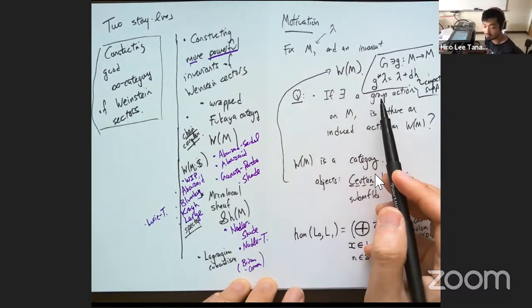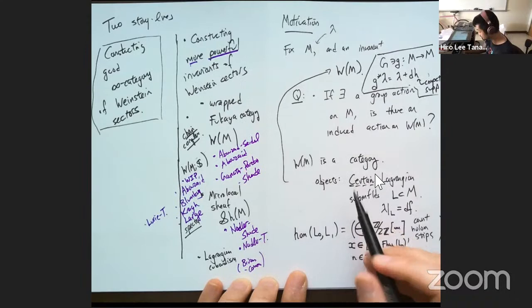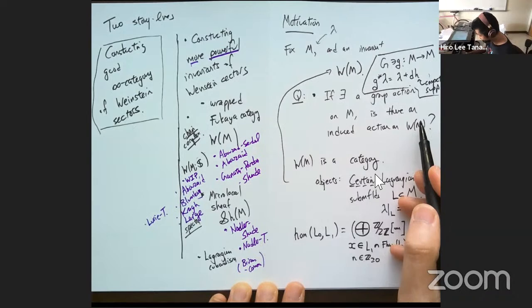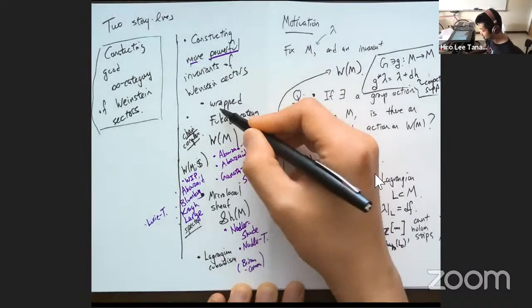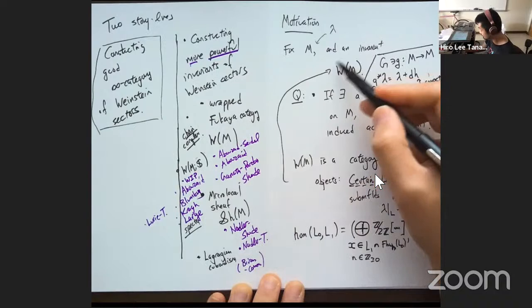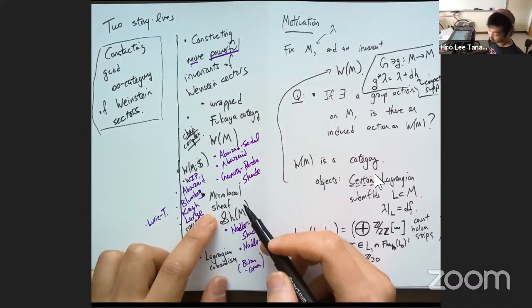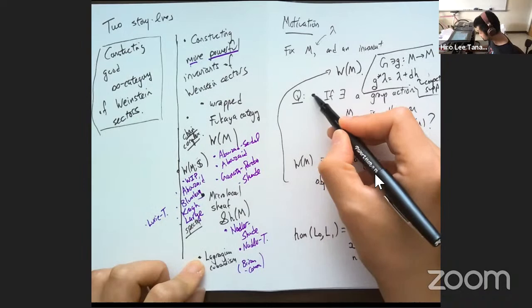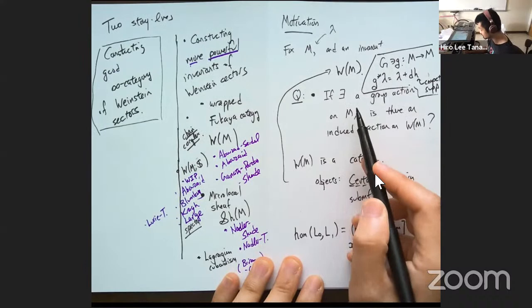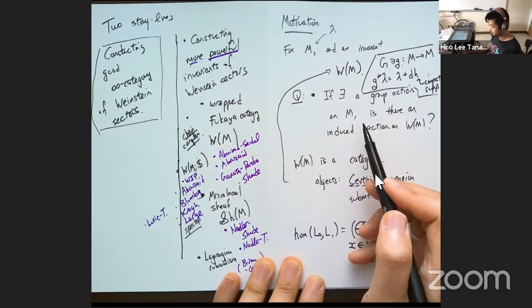This is a question you can ask for any invariant — not just wrapped things. It could be for the microlocal sheaf category, Lagrangian cobordisms, spectral wrapped category. If there's any justice in the world, and if there's anything natural about your invariant, the answer ought to be yes. One annoying thing is even if the answer is yes, it looks like you'd have to use completely different kinds of tools to answer in the affirmative for each of these invariants. Whatever you do to verify this for the wrapped category, you better have something to do with holomorphic strips; for microlocal sheaves, you'd better use techniques that have to do with microlocal sheaves.